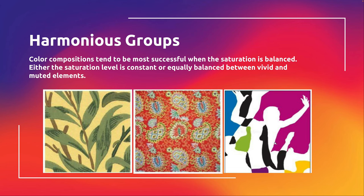Even though this is very asymmetrical in design and color, it's still very balanced. You have this really dark, intense magenta color — this large area balanced by essentially one large area of white. You can balance solid intense colors with areas of negative space.